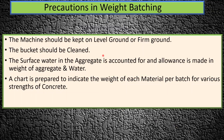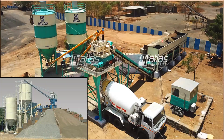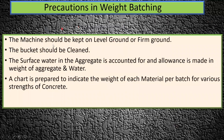The surface water in the aggregate is accounted for, and allowance is made in the weight of the aggregate and the water. This is an advantage of weight batching over volumetric batching. In volumetric batching, we were not considering the bulking of sand and the wetting of coarse aggregate. In weight batching, before using the aggregate, we test it for moisture content. If sand is not in a dry condition, we apply a moisture correction factor before concreting.